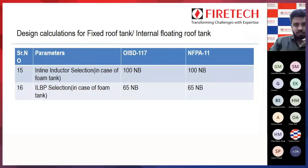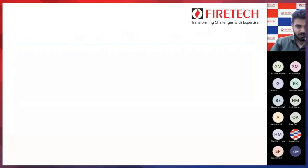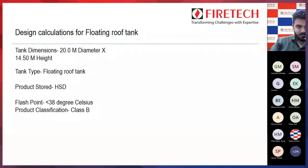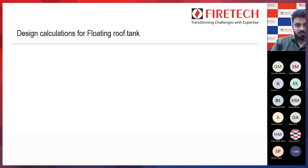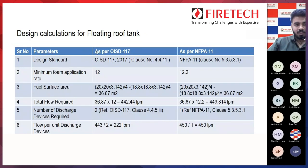Those were the calculations for the fixed roof tank. Now we will understand the same for the floating roof tank. We are considering the same tank — 20 meter diameter. The tank type is floating roof tank, product stored is HSD, flash point is less than 38 degrees Celsius, and product classification is Class B. A pictorial image depicts the floating roof tank. Design is shown as per OSD 117 and NFPA 11.